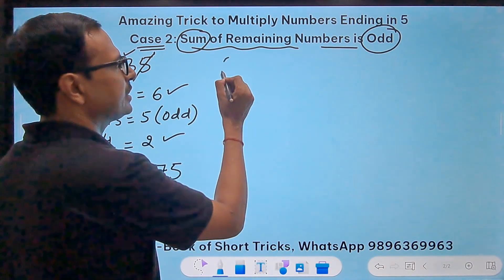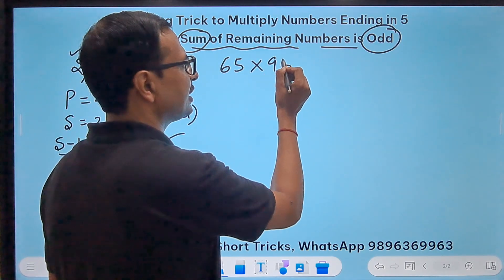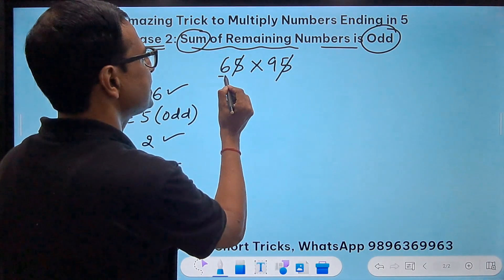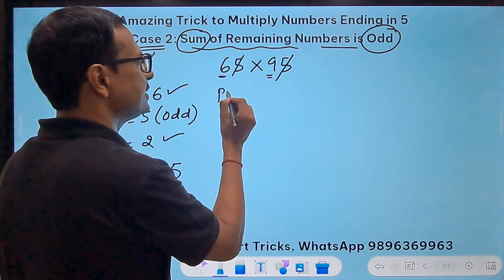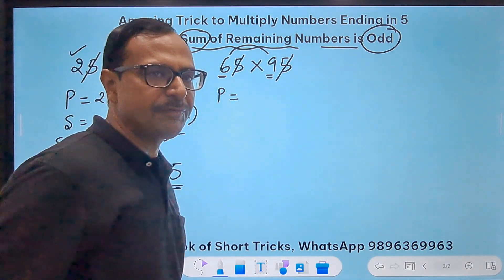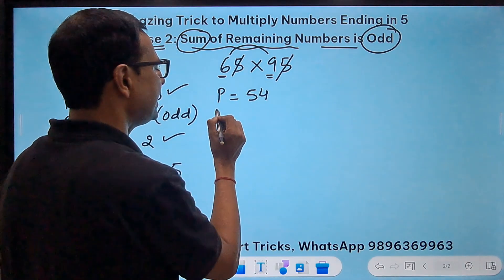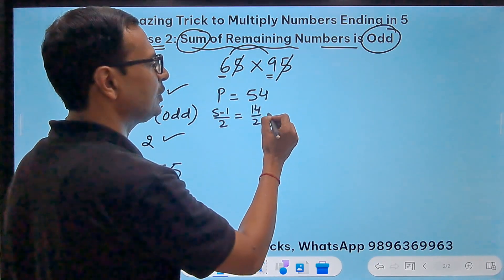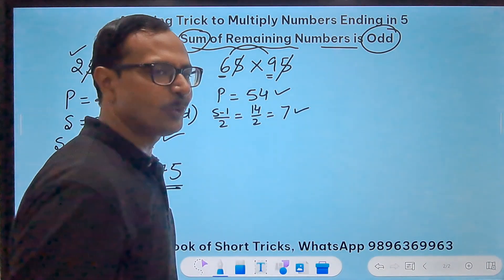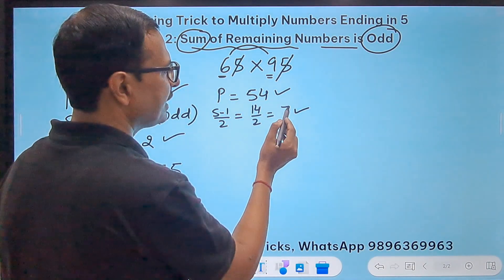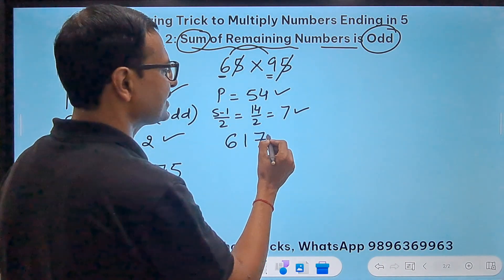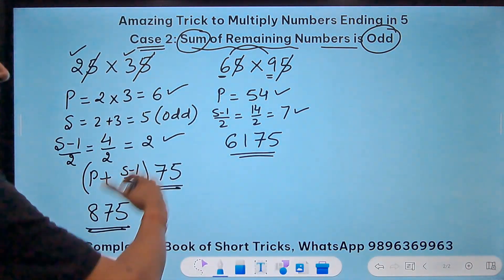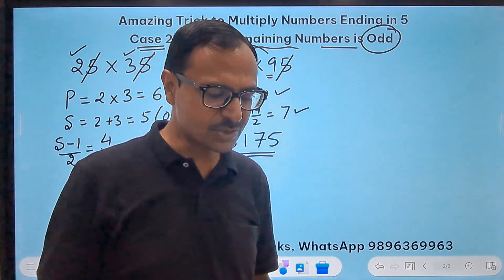Let's take another example. Here we have 65 and 95. Eliminate the 5s, 6 and 9. The product is 9 sixes are 54, and S minus 1 upon 2, the sum is 15. So 15 minus 1 is 14, 14 by 2 is 7. When you add these two you get 54 plus 7 which is 61, and suffix 75 to the result you get your answer 6175. See how the number of steps are getting reduced as we progress through the questions.